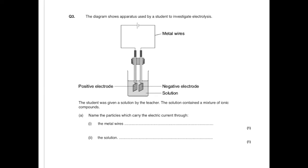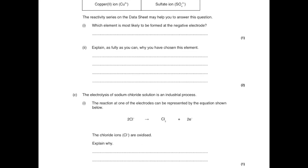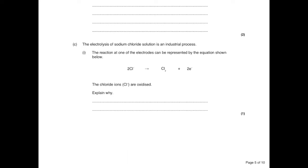The diagram shows apparatus used by students to investigate electrolysis. The student was given a solution containing a mixture of ionic compounds. Name the particles which carry the electric current through the metal wires — that's the delocalised electrons, and in the solution it's definitely going to be ions. Which element is most likely to be formed at the negative electrode? It has to be a positive ion, so looking at the table: zinc, iron, hydrogen, and copper — the answer is copper, because copper is the least reactive element. Explain as fully as you can: first, because the copper ion is positively charged, and second, because it is the least reactive. Finally, the chloride ions are oxidised — explain why. Remember OIL RIG: oxidation is loss of electrons, so just say that electrons are lost.